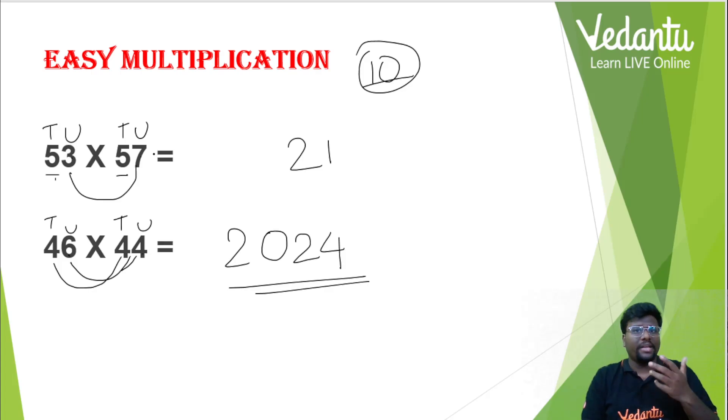Then, 5 5s are 25. 25 plus 5, that is 30. So, 3021 is the answer for this one. Isn't it amazing, guys? If it is amazing, do hit the like button and comment. Amazing.